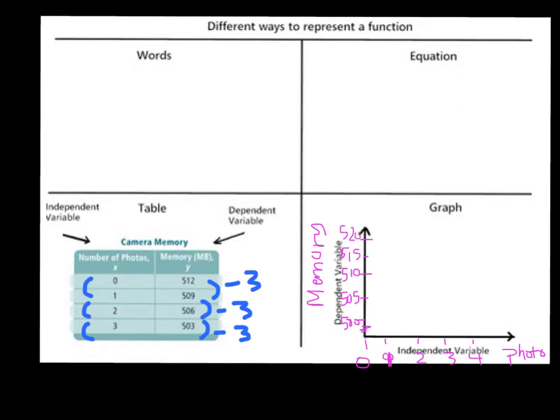Again, your graph is going to look way better than mine. Now I plot. So these first ones are my coordinate points. So 0, 512, going to be about there. Then 1, 509, approximately there.